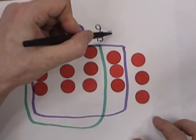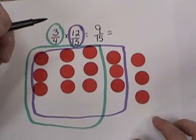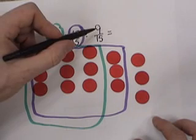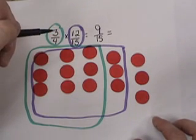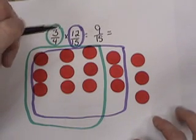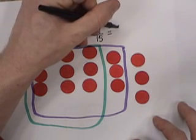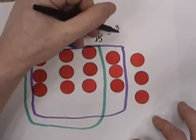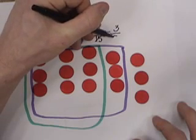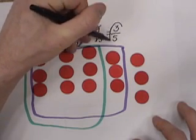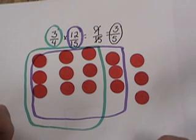Now remember, we can simplify this by finding a common factor that goes into 9 and into 15. That would be 3. 3 goes into 9 three times. 3 goes into 15 five times. The answer to our question is 3 fifths.